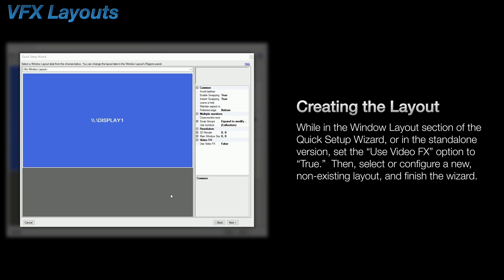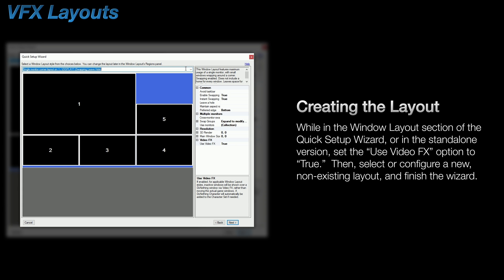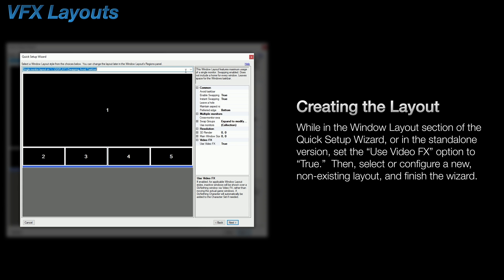Next, and this might almost seem too easy, but when in the window layout portion of the Quick Setup Wizard or the standalone version of it, locate the Use Video Effects option near the bottom, set it to True, and then pick a brand new, non-existing window layout from the drop-down. Finally, finish the wizard, and that's it.